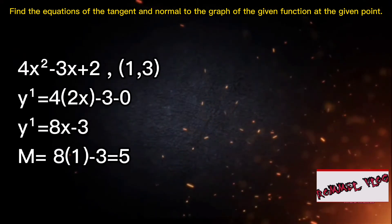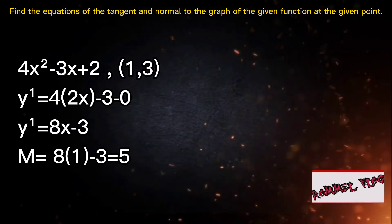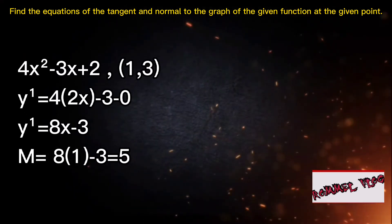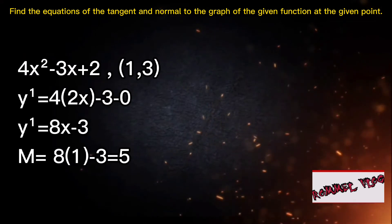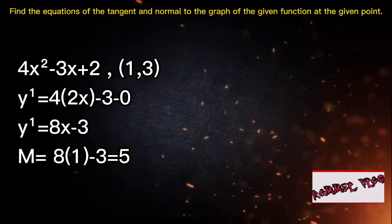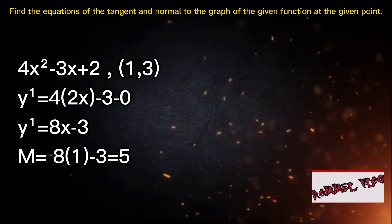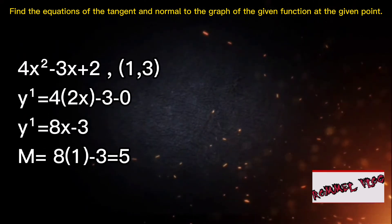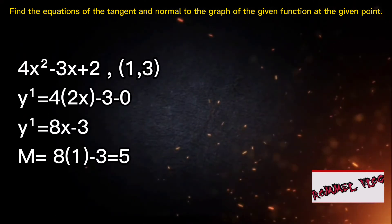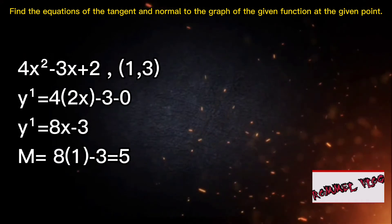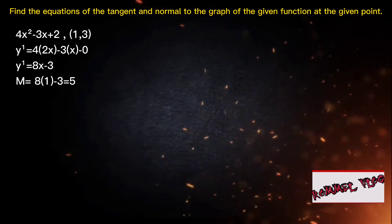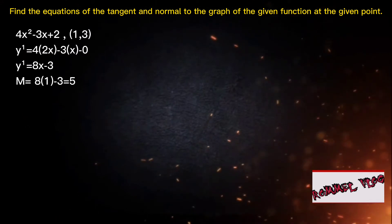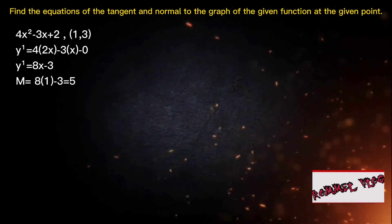To find the slope, we substitute the value of x from the given point into the derivative. So 8 times 1 minus 3 gives us a slope of 5.